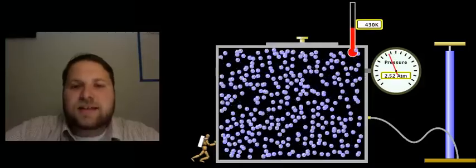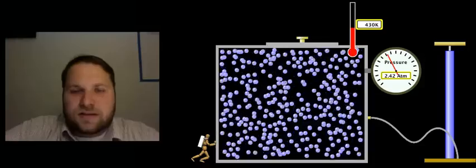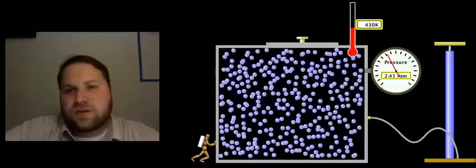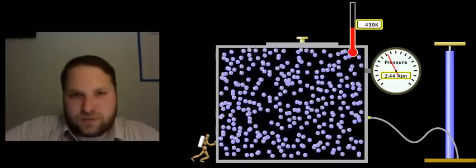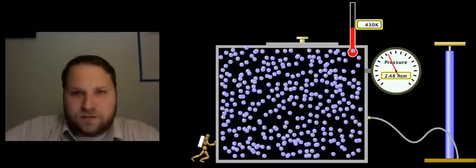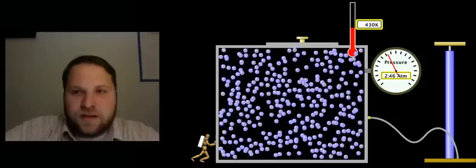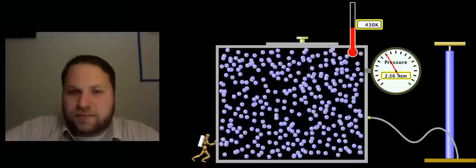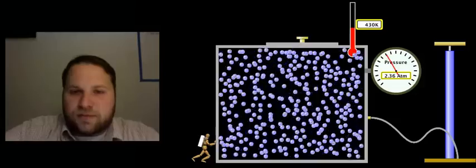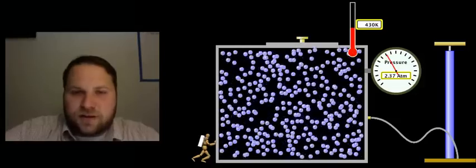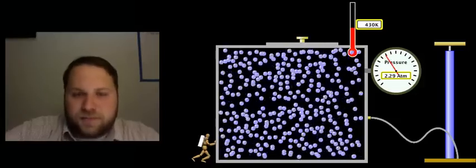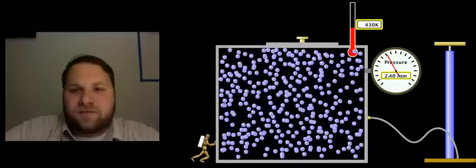Just like the number of particles, temperature is directly proportional to the pressure. If temperature goes up, pressure will also go up. If temperature goes down, pressure goes down. So just recapping, temperature and number of particles are both directly proportional to the pressure. If one goes up, the other goes up. Now we're going to look at volume.